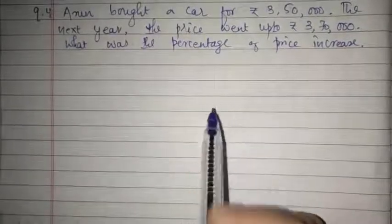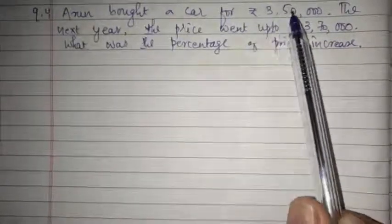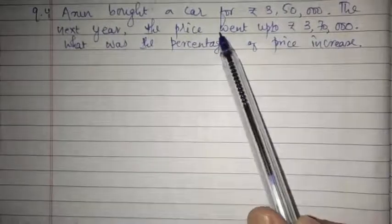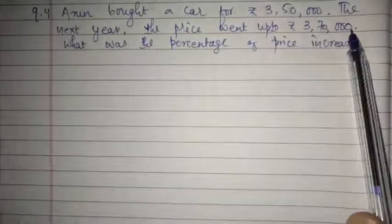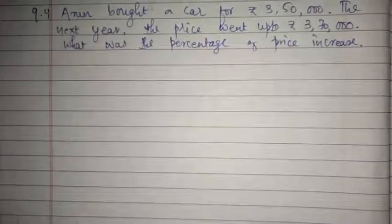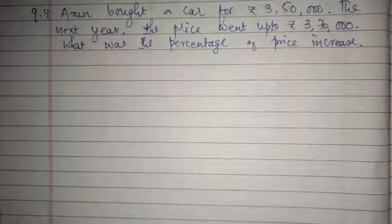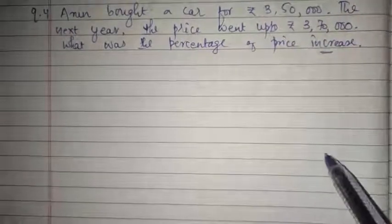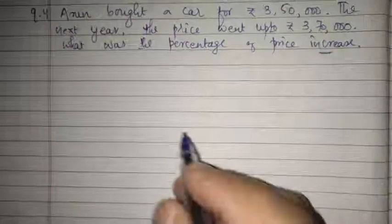Question number 4 states: Arun bought a car for rupees 3 lakh 50,000. The next year the price went up to rupees 3 lakh 70,000. What was the percentage of price increase? It is similar to question 3 but here we find the percentage of price increase instead of decrease.